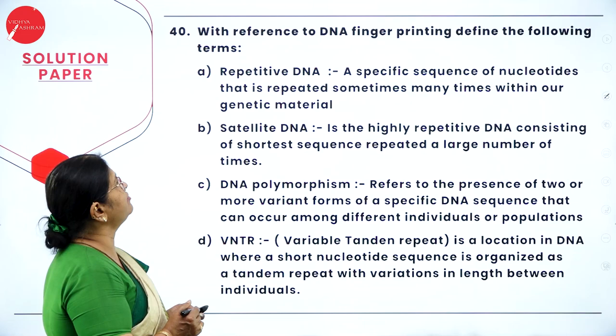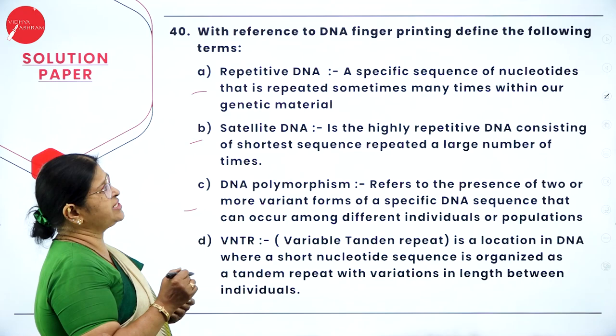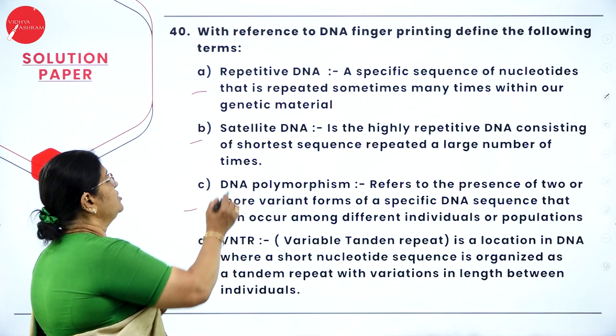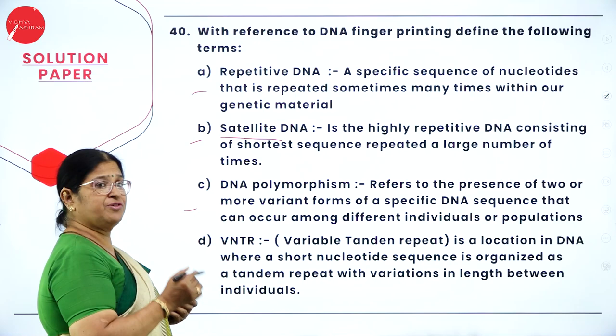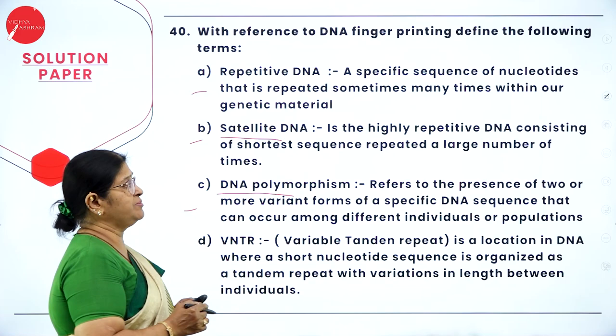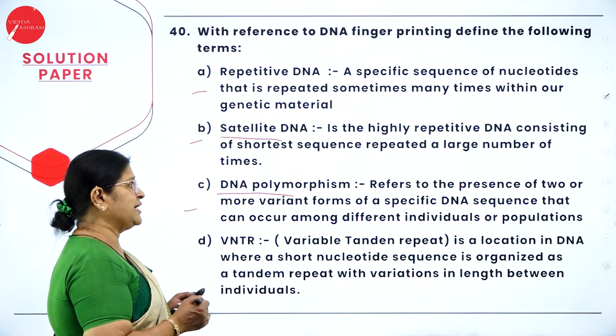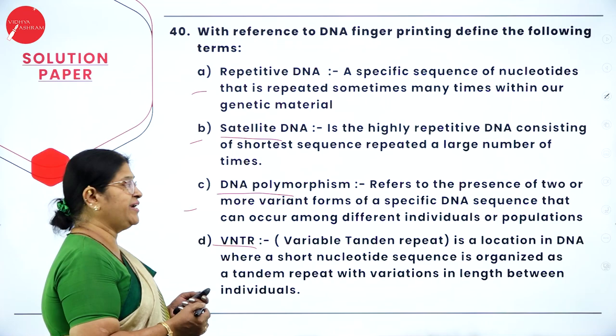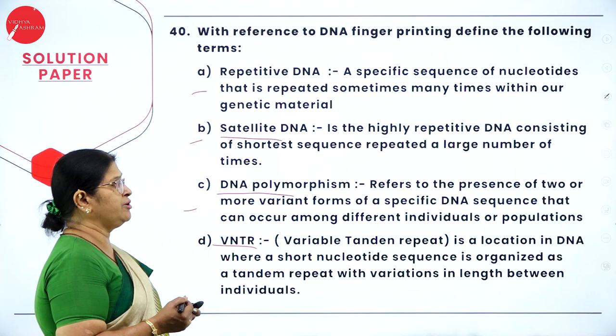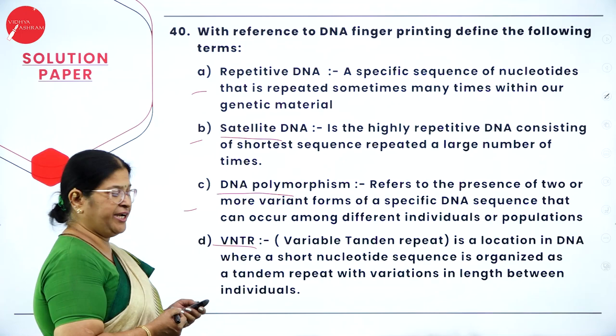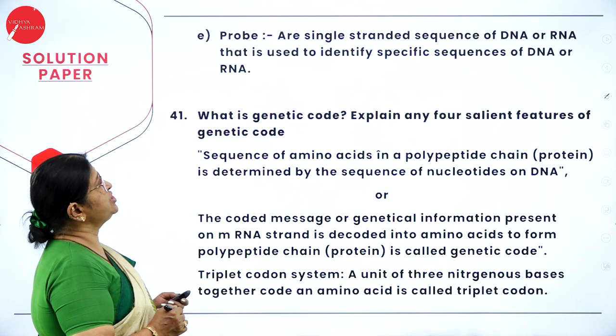Question 40 (split) — DNA fingerprinting terms: A) repetitive DNA — a specific sequence of nucleotides repeated many times within our genetic material. B) satellite DNA — highly repetitive DNA consisting of shorter sequences repeated a large number of times. C) DNA polymorphism — presence of two or more variant forms of a specific DNA sequence that can occur among different individuals or populations. D) VNTR (variable number tandem repeat) — a location in DNA where a short nucleotide sequence is organized as a tandem repeat with variations in length between individuals. E) probe — a single-stranded sequence of DNA or RNA used to identify specific sequences of DNA or RNA.